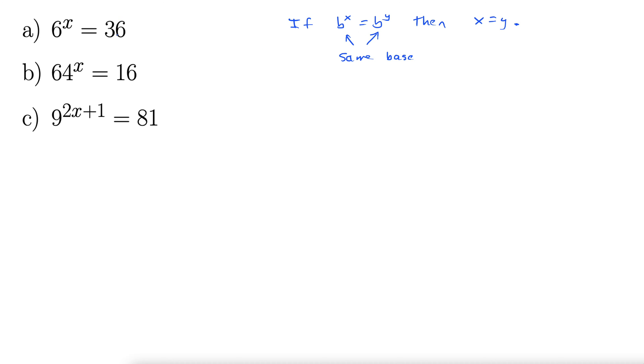Let's look at this first example. We have 6 to the x equals 36. Well we can rewrite this as 6 to the x equals 6 squared. And now our bases are the same. So by this little theorem here, that tells us that our exponents must be equal.